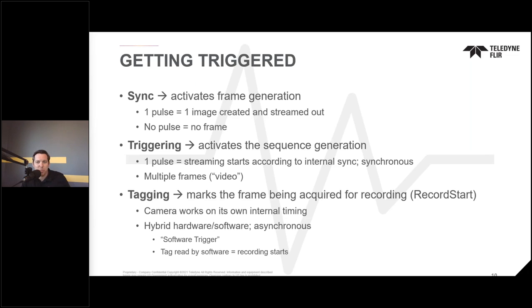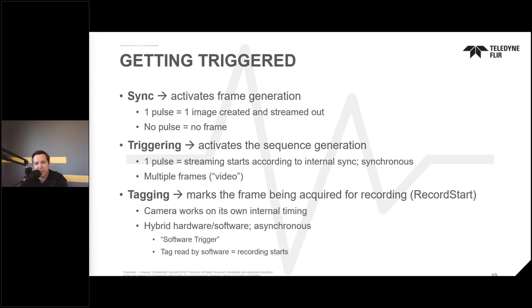Now we have a basic understanding of a trigger, but this is where things can get a little squirrely. A trigger means different things to different people. Let's get alignment on how we talk about it here in the FLIR Research and Science vertical. Sync is going to be the pulse that tells the camera to generate an individual frame of data — another way to say this is that the sync pulse tells the camera to take a snapshot or take an image. You could send the signal to one camera, to multiple cameras, or have cameras set up in a master-slave configuration to capture the specific images needed for your application.